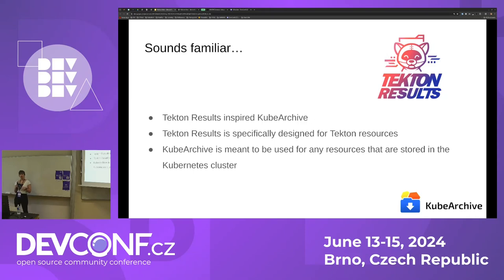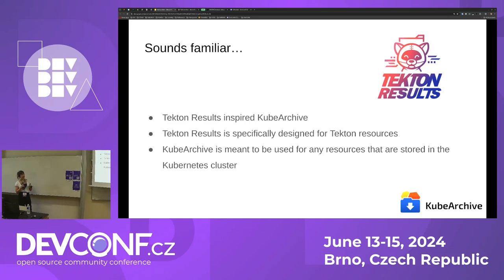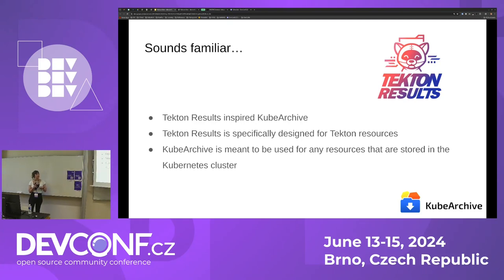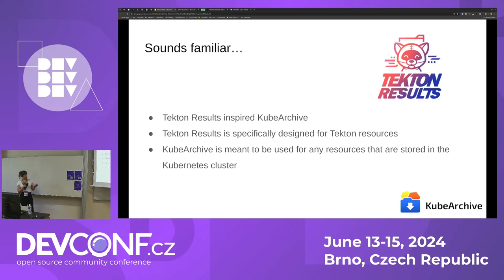This might sound familiar for those of you that already use Tekton, because Tekton pipelines have another tool called Tekton Results that tries to solve this issue, but just focused on Tekton resources. Although that was the main inspiration for doing kubearchive, kubearchive wants to address all kinds of resources you may find in the Kubernetes cluster, not just Tekton resources. That's the main difference.